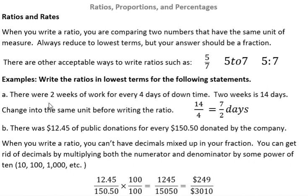So in example number A, there are two weeks of work for every four days of downtime. Well, two weeks is 14 days, and so instead of saying 2 to 4, which are different units, I want to change the weeks into days. So there's 14 days, and then I say 14 instead of two weeks, 14 days to four days, and then I would reduce that to lowest terms and say 7 over 2 days. There's 7 to 2. In other words, there's 7 days of work for every two days off.